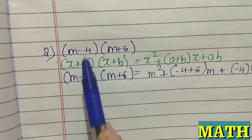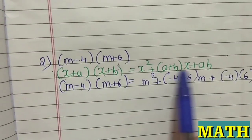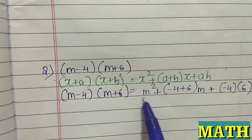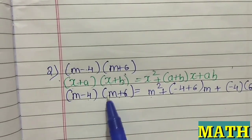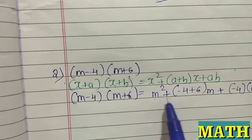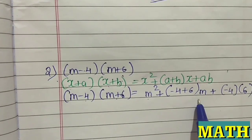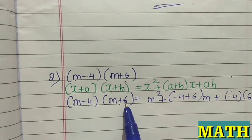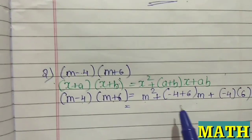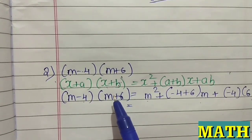This is the second sum. Again it is in the same form, so we will use the same expansion formula. For (m-4)(m+6): m² + (a+b)m + ab, where a=-4 and b=6. So we write m² + (-4+6)m + (-4×6). The steps remain the same for all these types of questions.